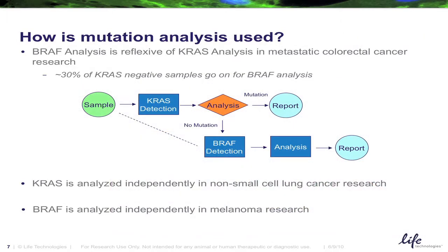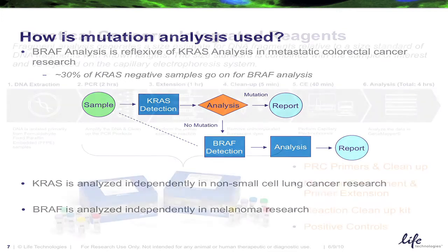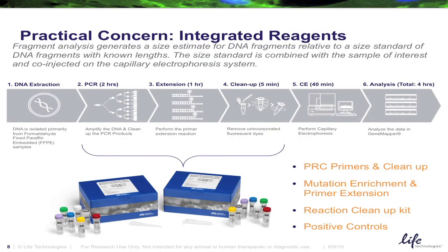How is this analysis being used? We know from prior publications that KRAS and BRAF mutations appear mutually exclusive from each other, particularly in metastatic colorectal cancer samples. This has led to a process in which samples are first analyzed for KRAS mutations. If no mutation is found, then they go on for BRAF analysis. Now let's take a closer look at the mutation analysis reagents specifically for the detection of KRAS and BRAF mutations.